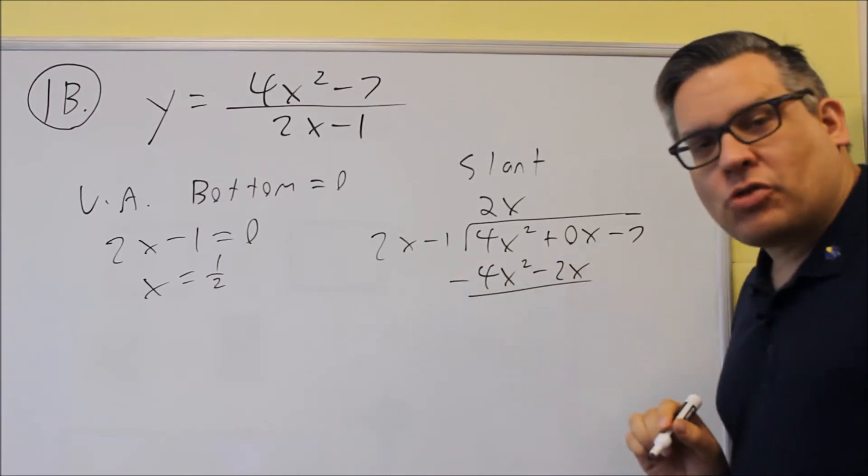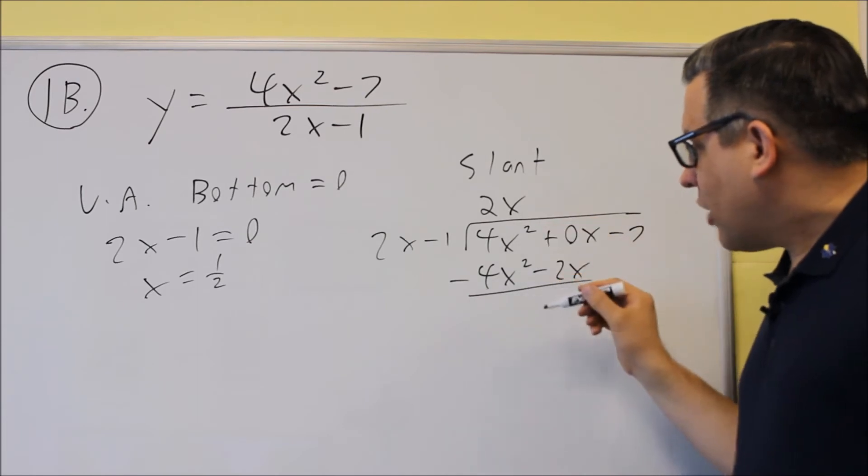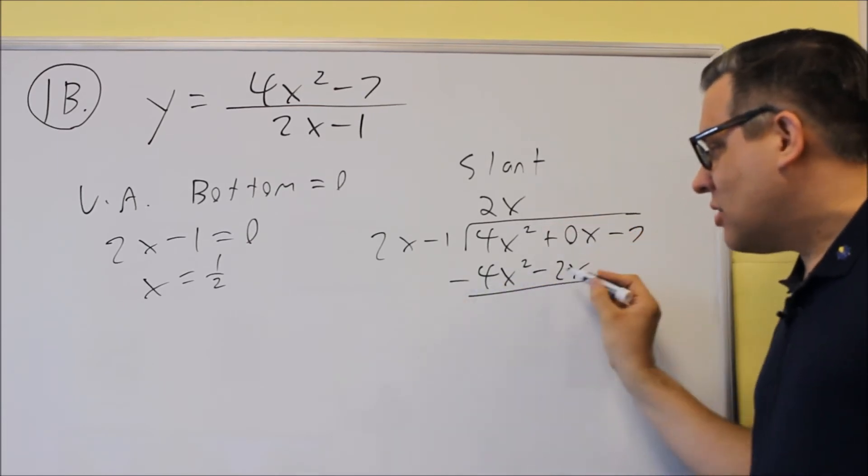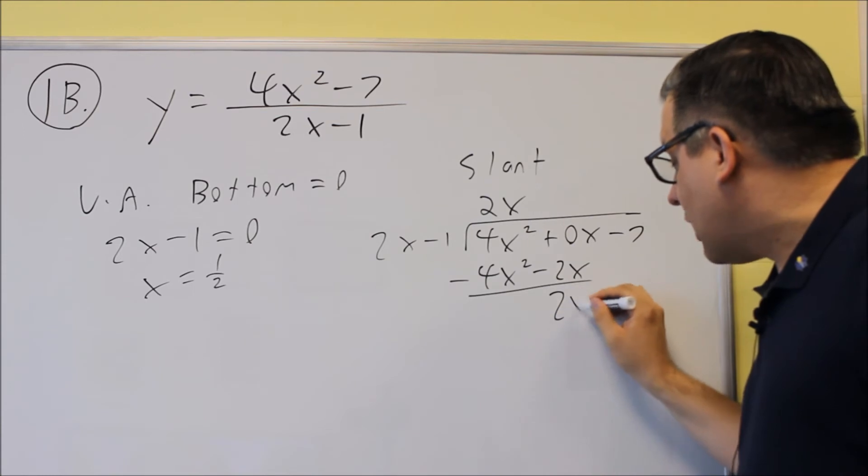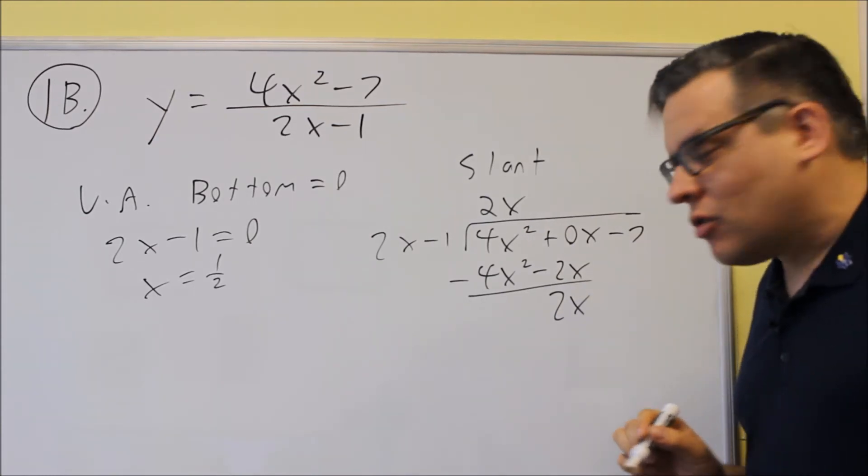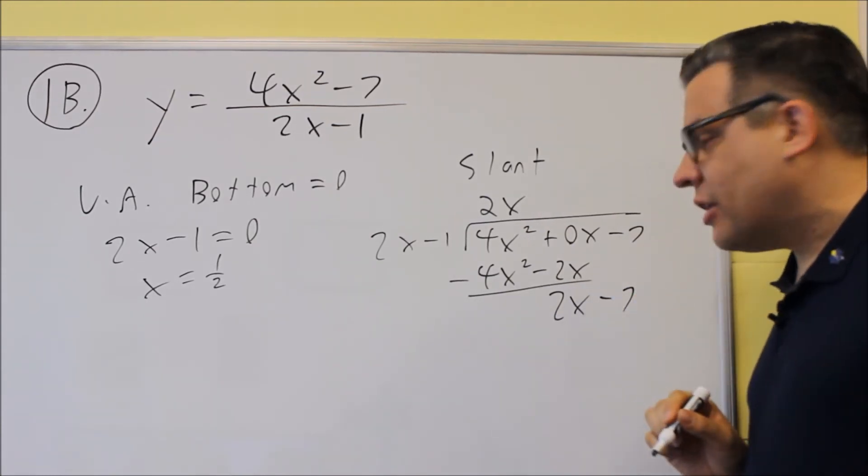Remember, you're always subtracting. And so when you subtract that, you have a 0 minus a negative 2. Be careful with those signs there. You'll get a positive 2 as a result. Then you'll bring down the negative 7.